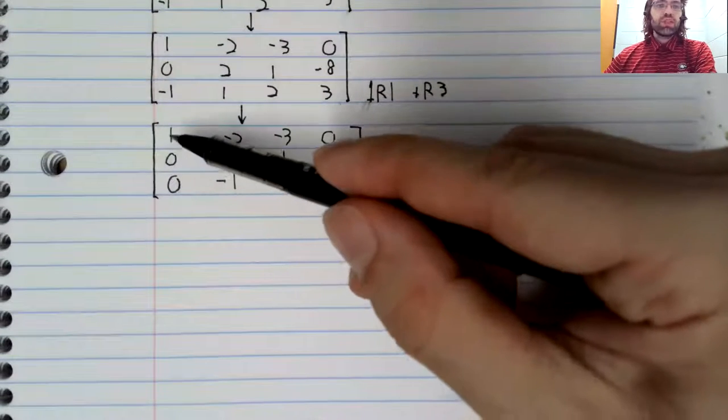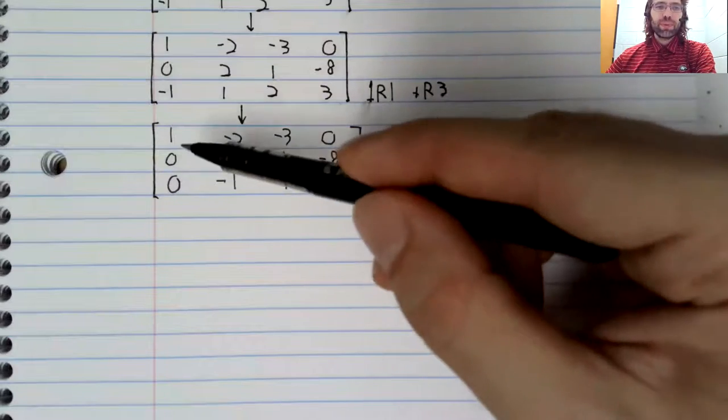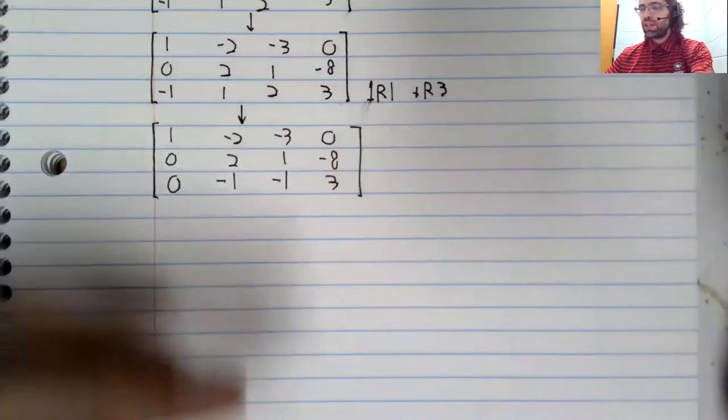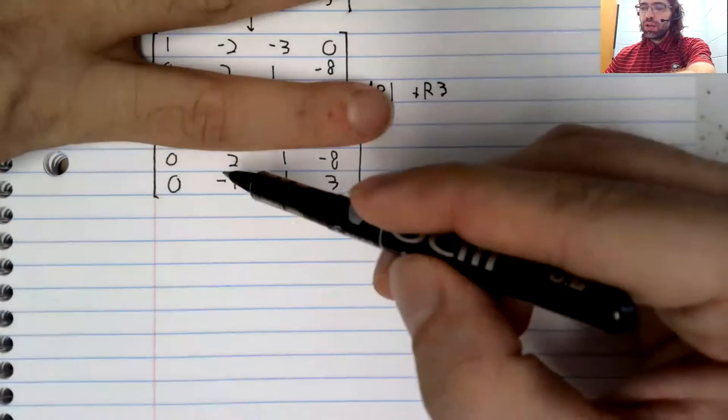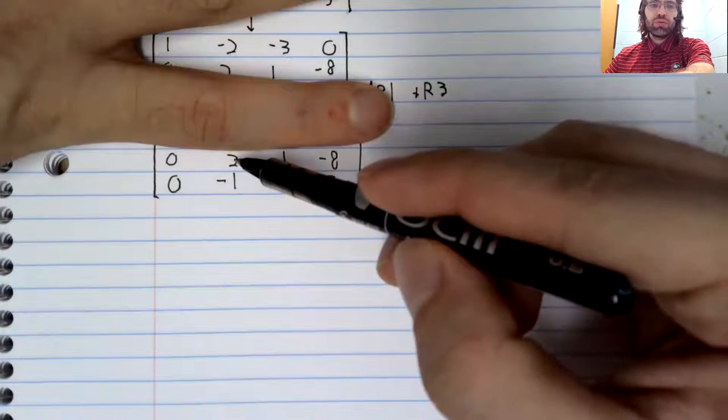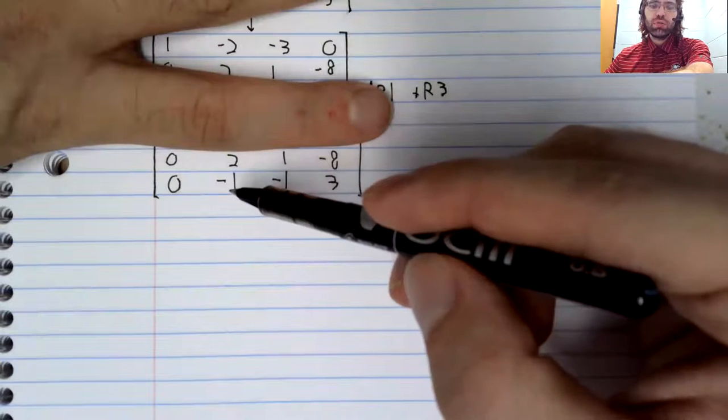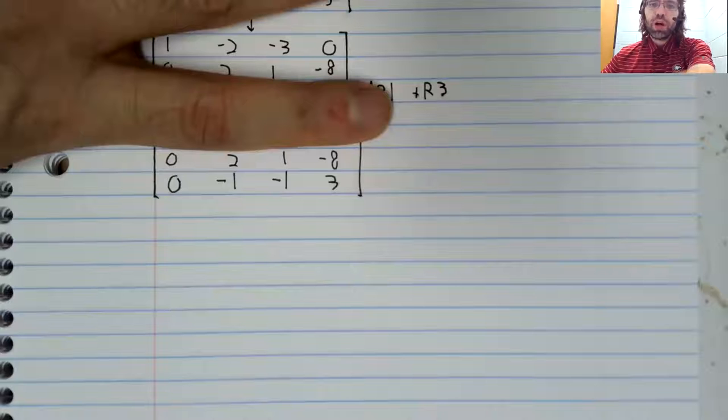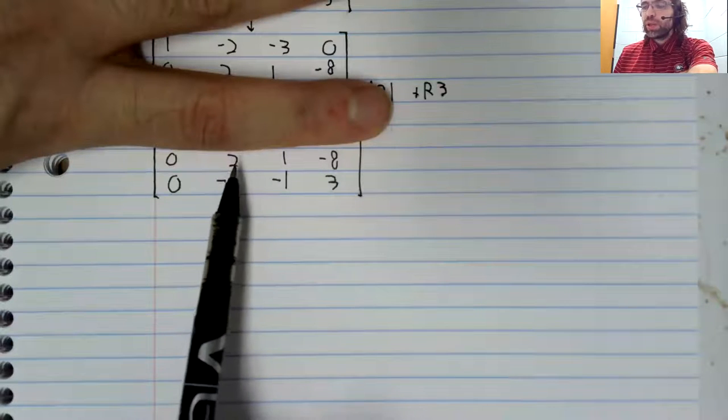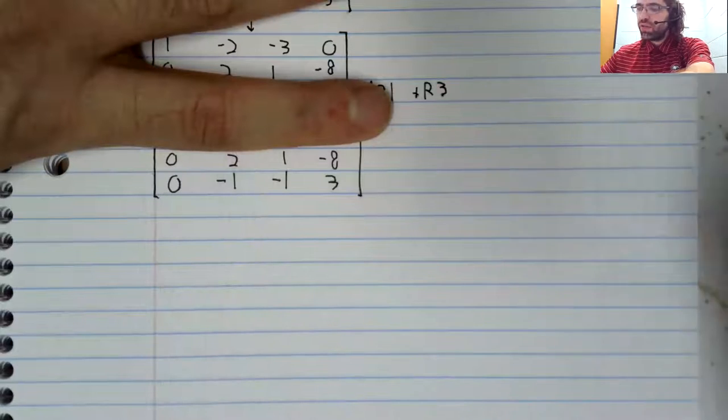Everything below this one is zero. So we're done with this column and we're done with this row. We will now use this two to turn this negative one to zero. Positive one plus negative one is zero, so we need to turn this two into positive one.